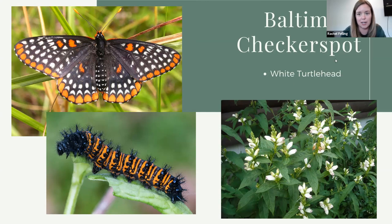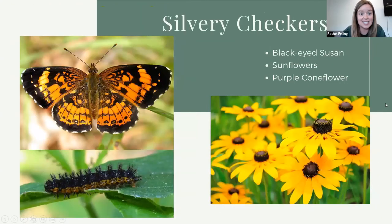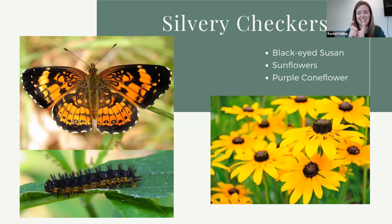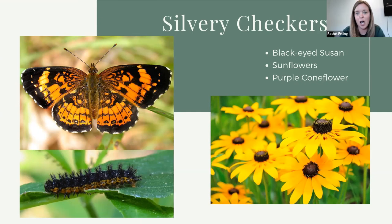Let's look at another checkerspot: the silvery checkerspot. This is one that you likely have seen around your home. They're not very big — an inch to two inches across. The caterpillar is similar in shape to the Baltimore checkerspot, with those little spikes up its back to look scary. The silvery checkerspot will lay their eggs on a few different things that are easy to grow in full sunlight — that's part of why these guys are more common.